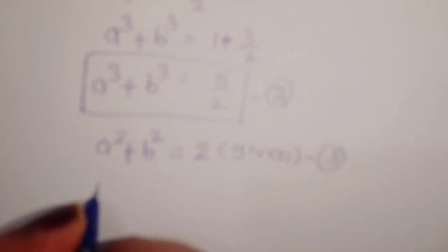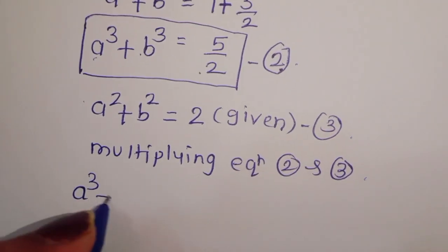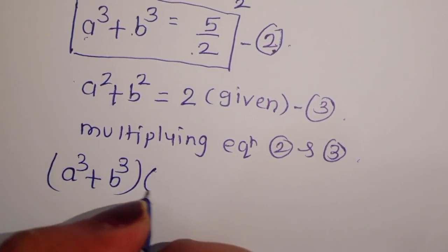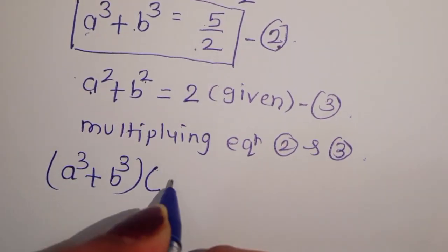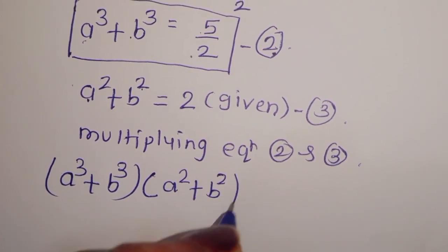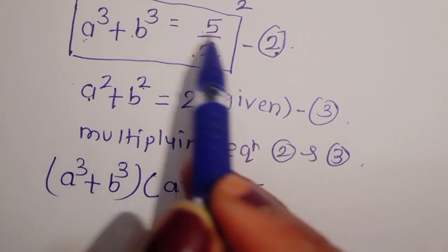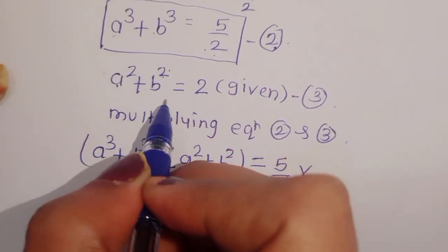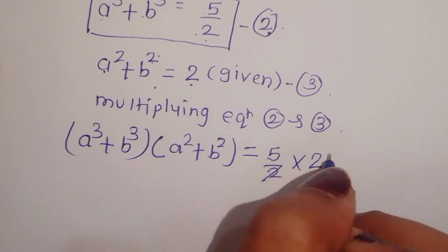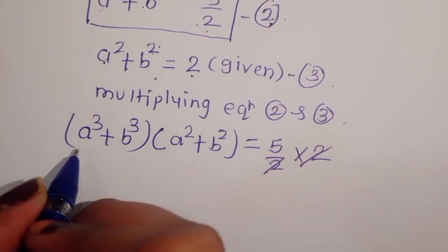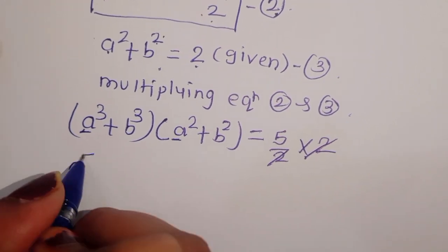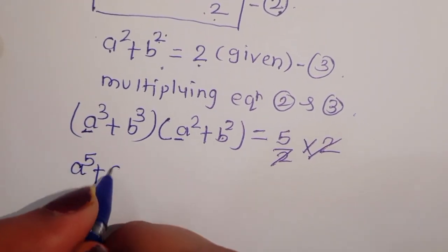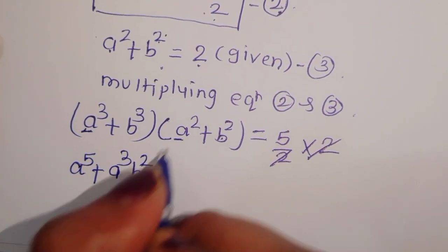Multiplying Equation 2 and Equation 3: (a cubed plus b cubed)(a squared plus b squared) equals 5 upon 2 into 2 equals 5. Expanding the left side, we get a power 5 plus a cubed b squared plus a squared b cubed plus b power 5.